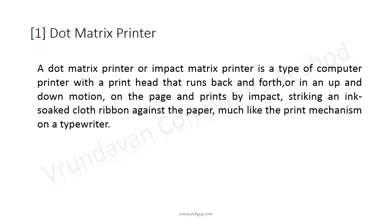A dot matrix printer, or impact matrix printer, is a type of computer printer with a print head that runs back and forth or in an up and down motion — much like the print mechanism on a typewriter.